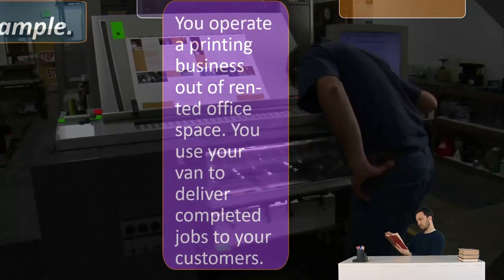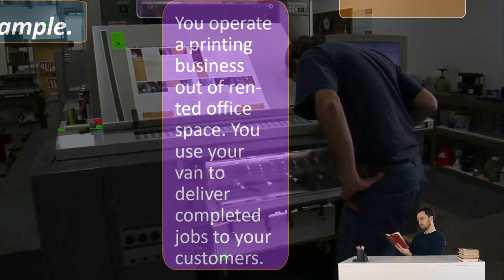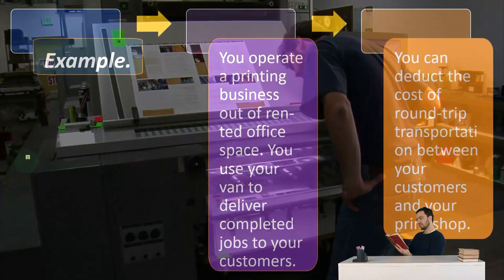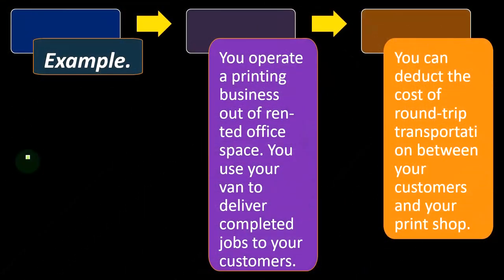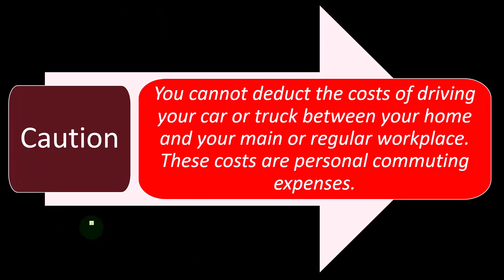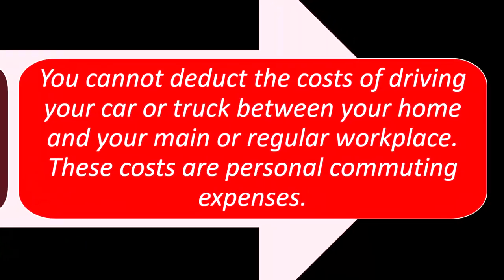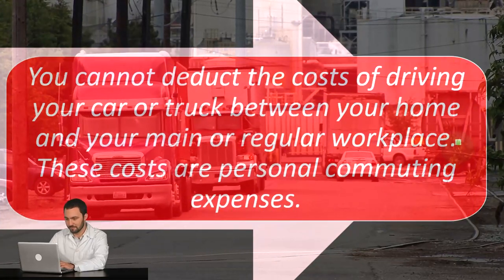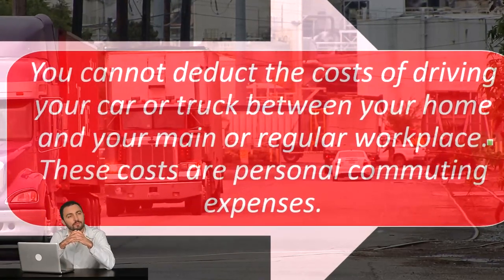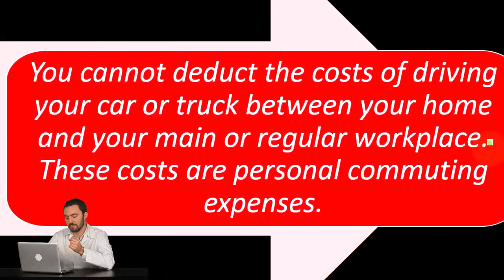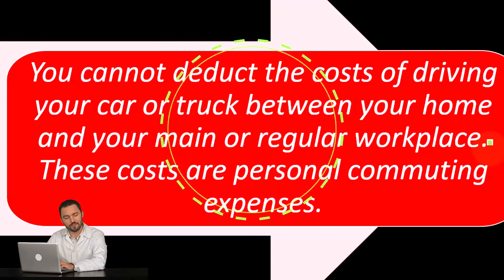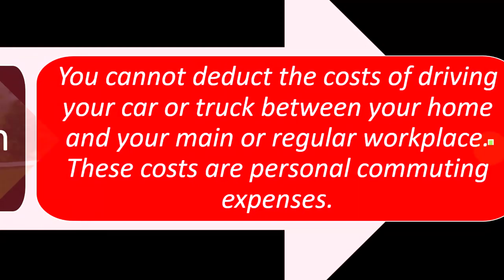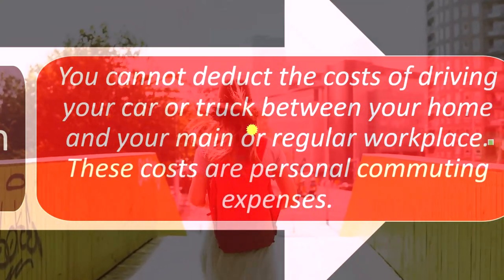Example: you operate a printing press out of a rented office space and use your van to deliver completed jobs to your customers. You can deduct the cost of round-trip transportation between your customers and your print shop. You would think driving to customers would be a deductible transportation expense — and it is. However, you cannot deduct the cost of driving your car or truck between your home and your main or regular workplace, because those are commuting miles. When tracking actual costs, it becomes difficult to parse out the costs related to commuting versus business travel, such as when filling up your gas tank.